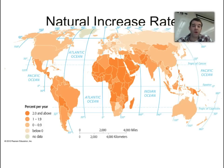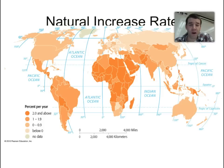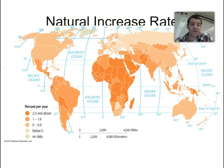If you look at the global choropleth map of the natural increase rate, we see that the vast majority of countries that are over 2.0 are actually located in Africa. And throughout Western Europe, North America, the more developed countries, you see much lower natural rates of increase.